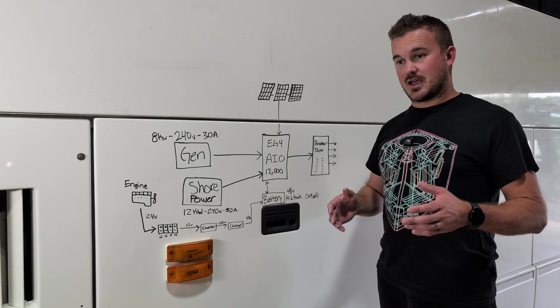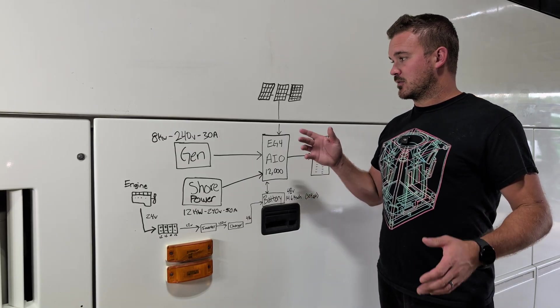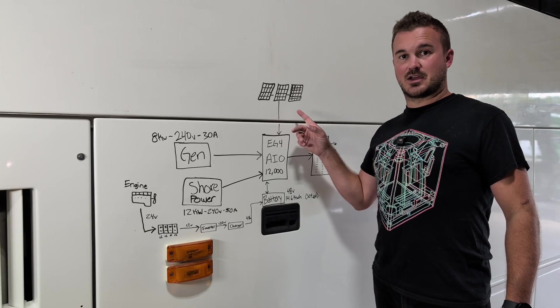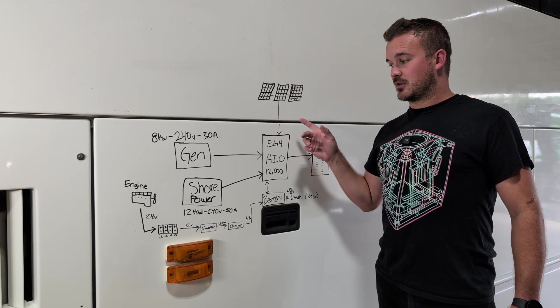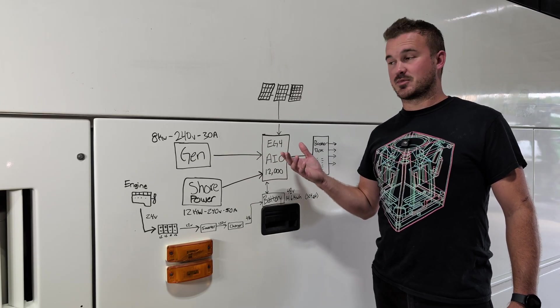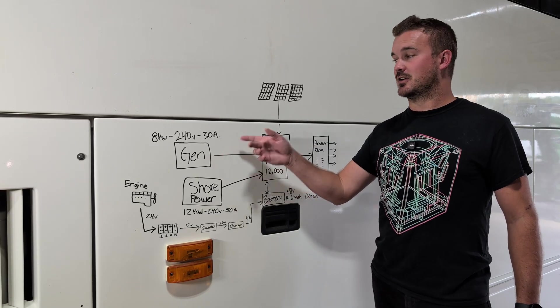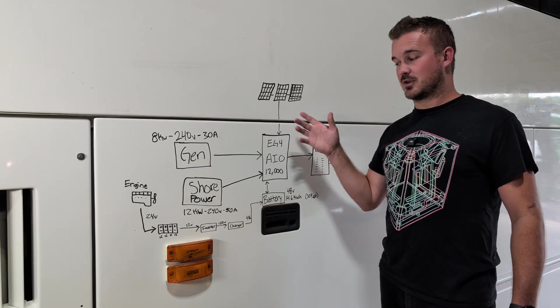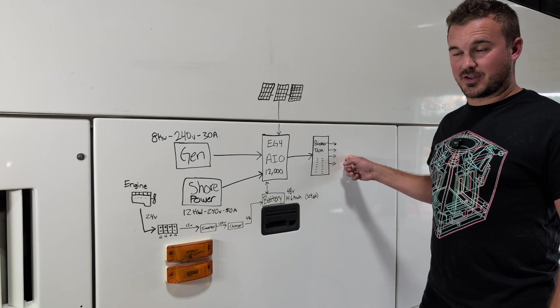But then as, say, a cloud comes over, then all of a sudden we're only getting 2,000 watts out of our sun, out of the solar, then this will automatically draw more from the generator to compensate for that loss of power. So this would be drawing 6,000 watts from the generator, 2,000 watts from solar to give us our 8,000 watts. So that would give us our 8,000 that we needed for our pretend load here.